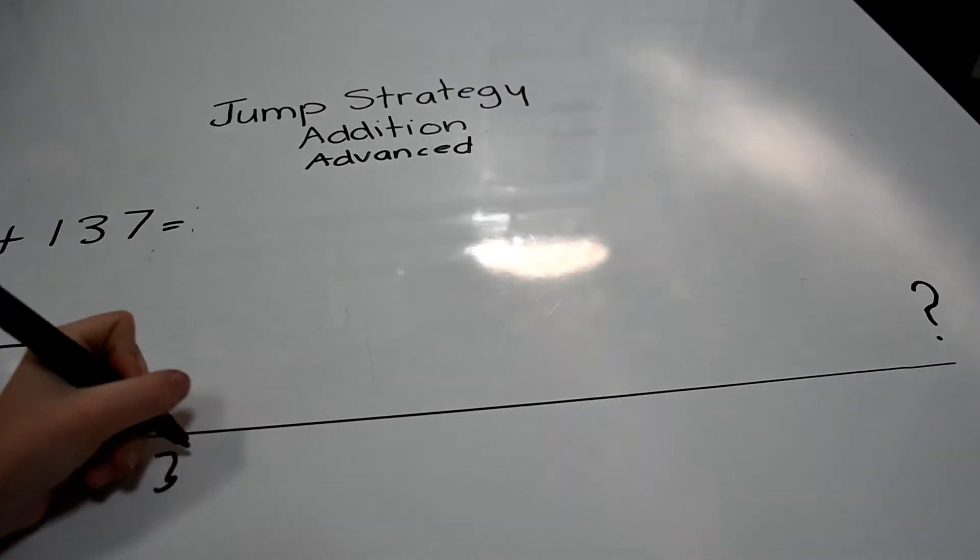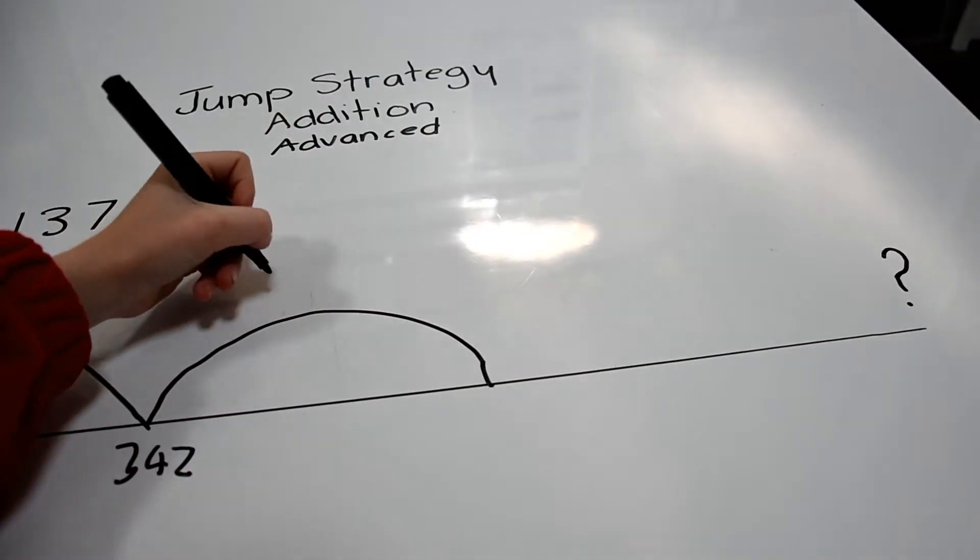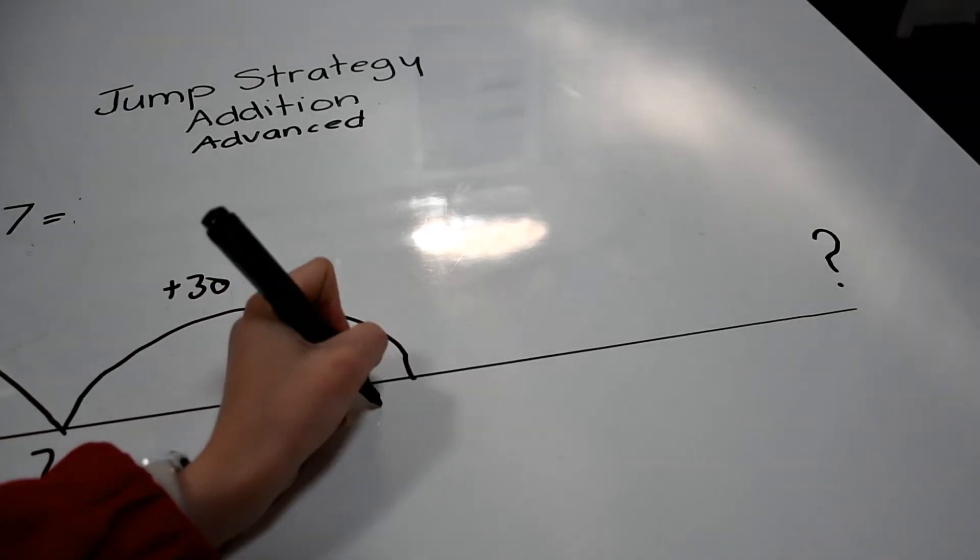We then add the tens, which we have 3 tens, so that's 30. And that brings us to 372.